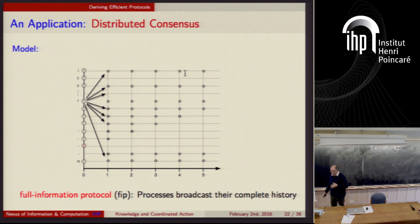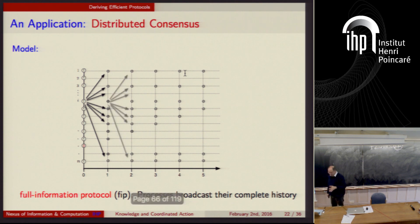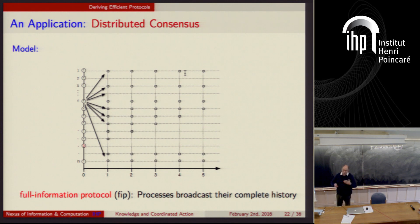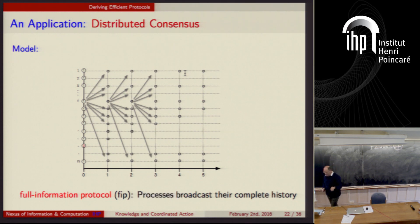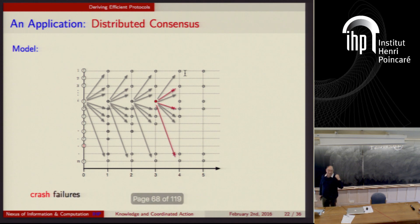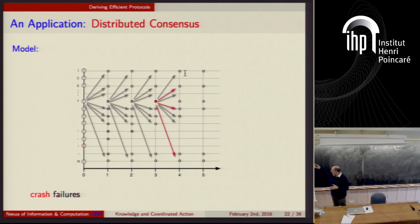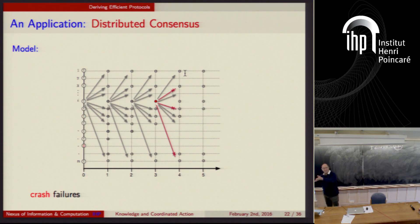We're going to look at a model in which we can have crash failures: at some point a process might crash. When it does, it tries to send to everyone, but succeeds in sending to only some — those are the successful messages, and for some arbitrary subset it fails. So one node receives the message and another doesn't — that's what happens in the crash failure model. We assume there's some bound t, given to the protocol designer, on how many failures may happen in any given execution.